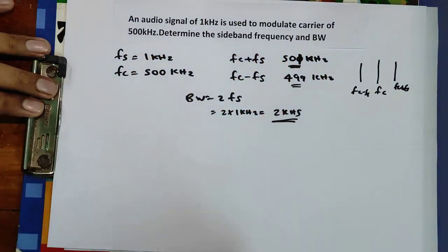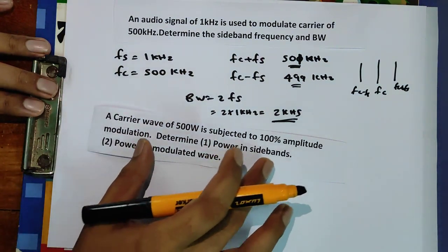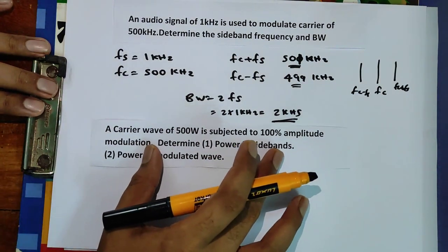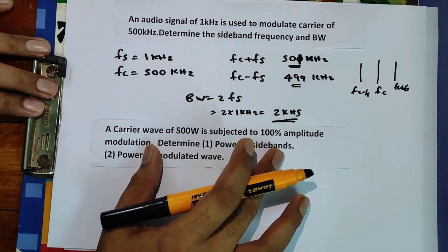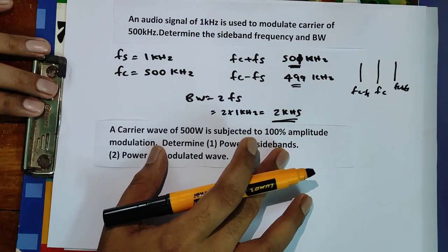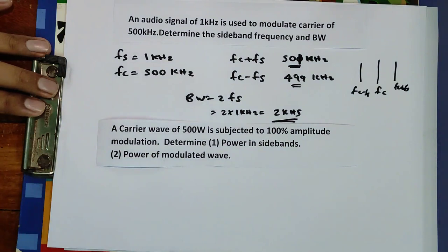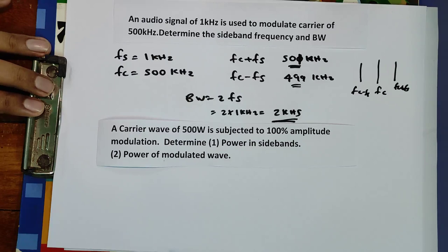The second question: a carrier wave of 500 watts is subjected to 100% amplitude modulation. Determine the power in the sideband and the power of the modulated wave.